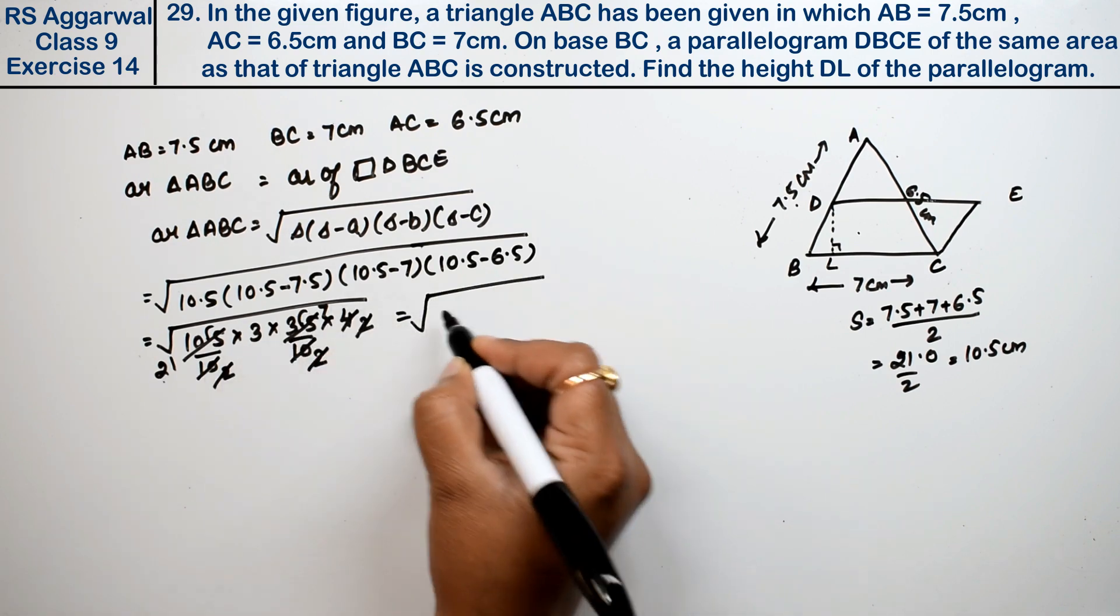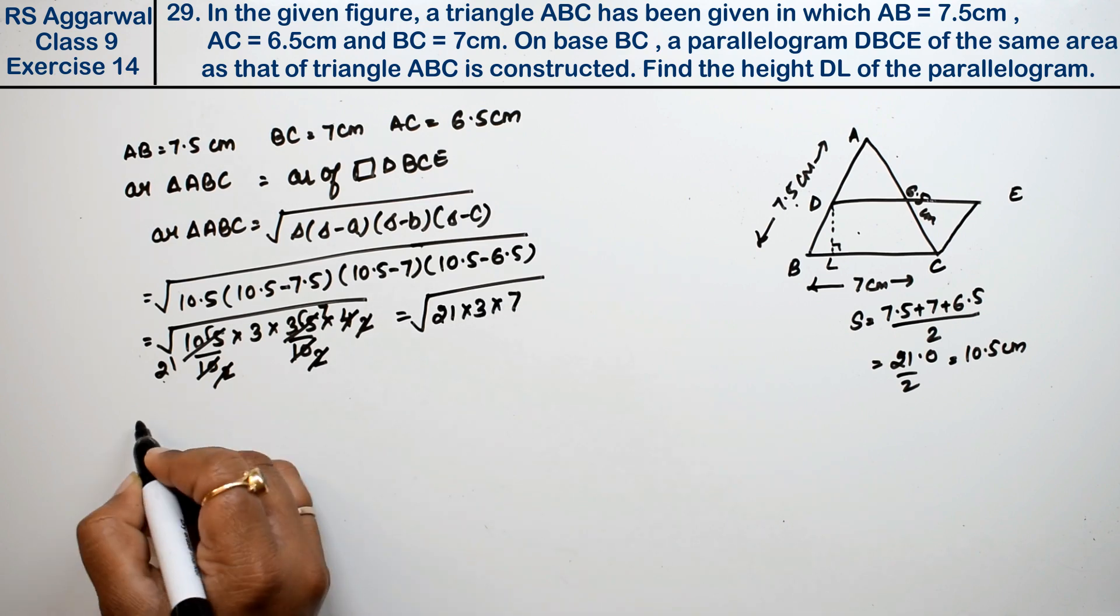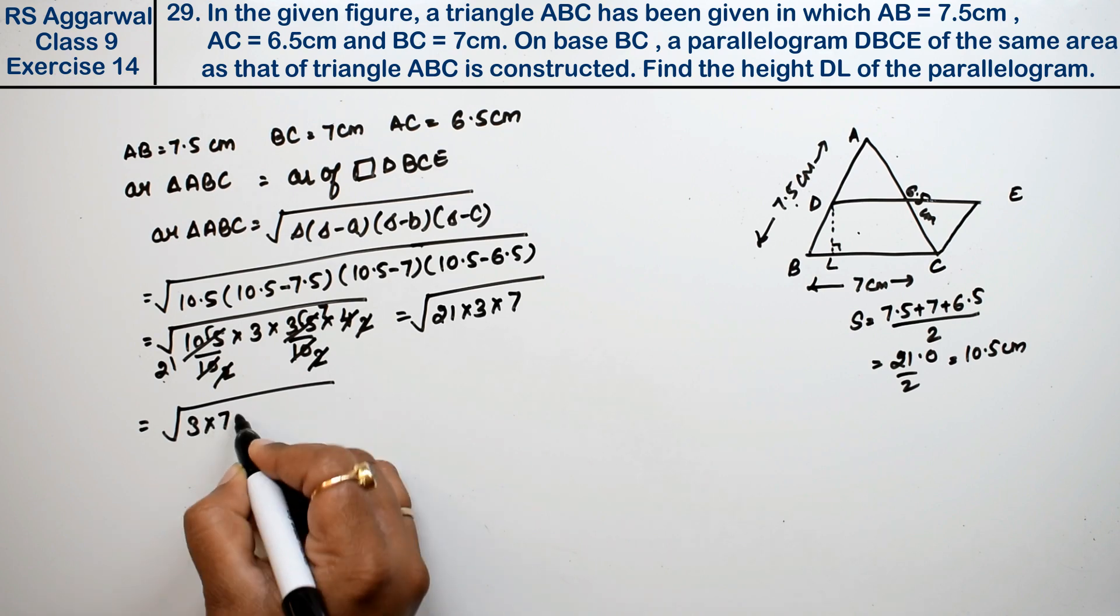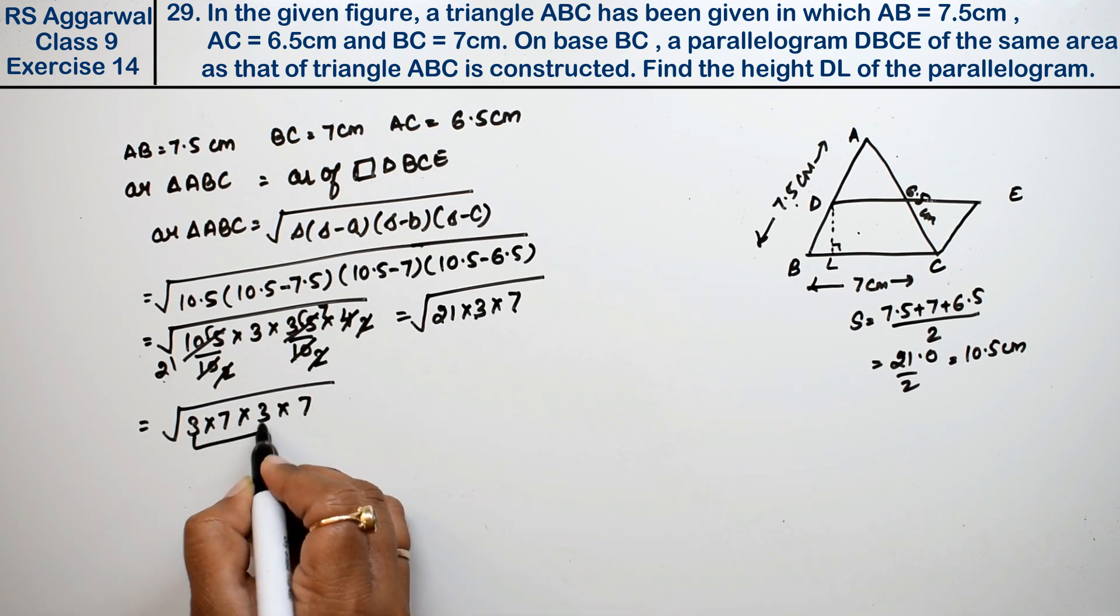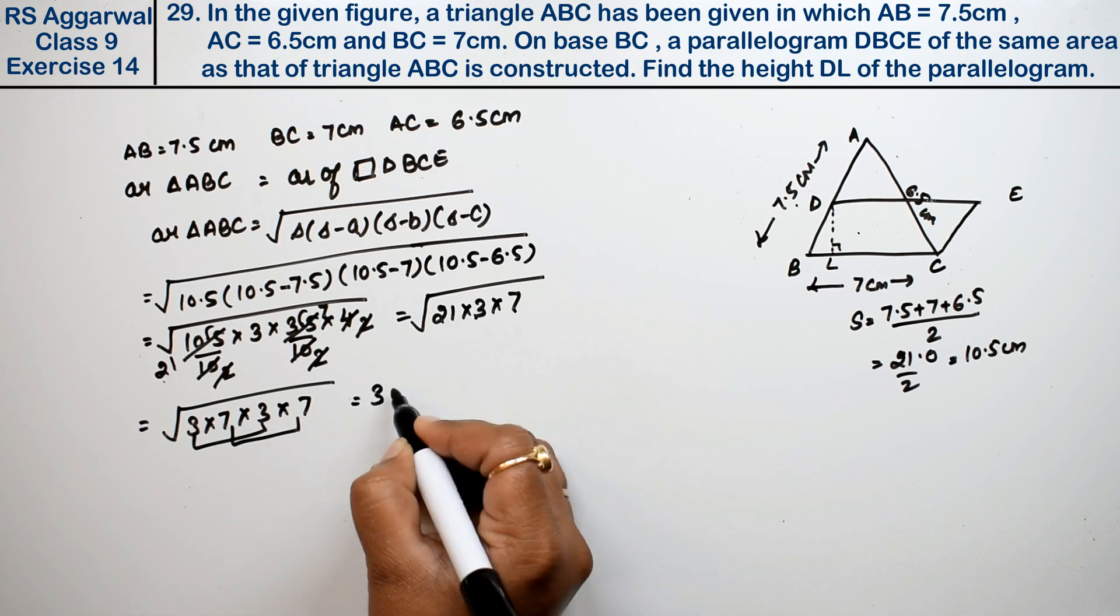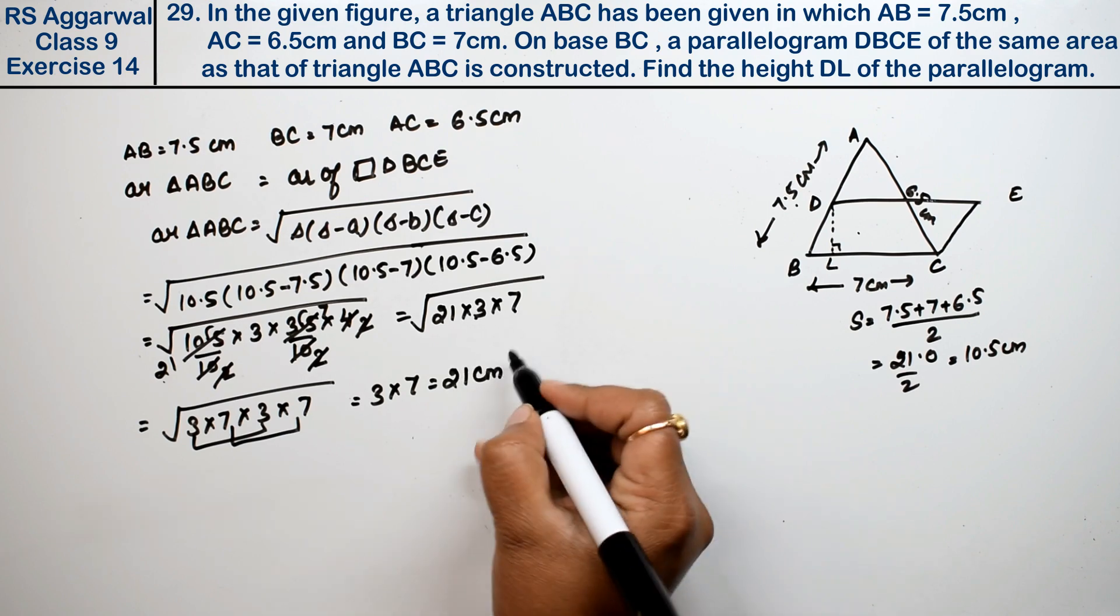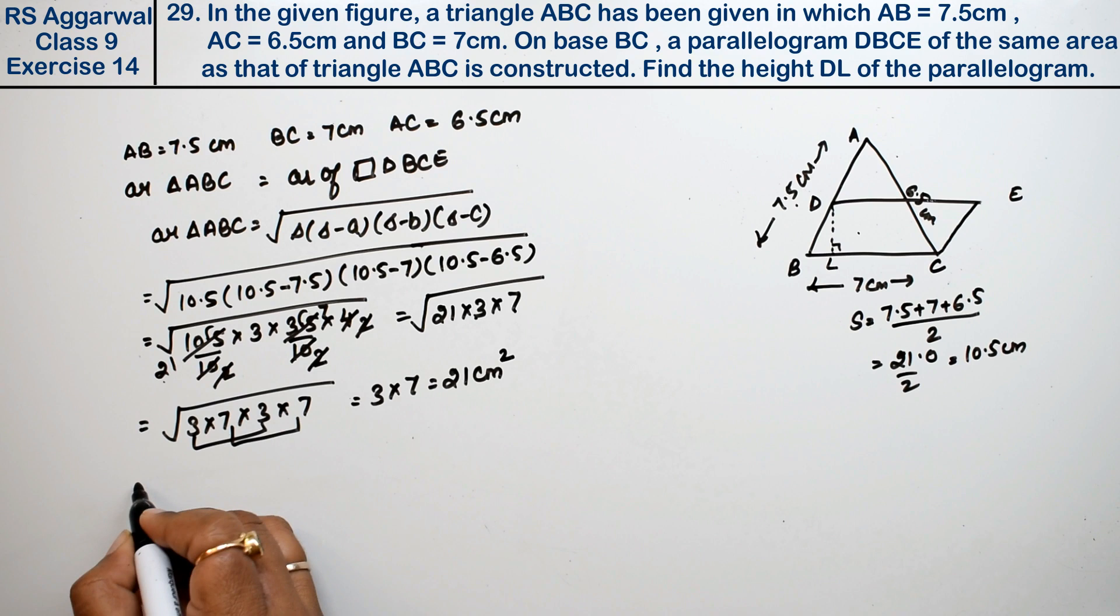21 can be written as 3 into 7, and another 3 into 7 was already there. Making pairs: 3 makes a pair, one 3 comes out; 7 makes a pair, one 7 comes out. That means 21 cm square. The area of triangle is 21 cm square.